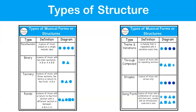Here are diagrams of the different types of structures. Monothematic is a single melodic idea that is repeated. Binary is two sections: AB. Ternary is ABA. Rondo is ABACA — represented with a circle, triangle, circle, square, circle, where the circle is A, triangle is B, and square is C. Theme and variations is a melody repeated with a variation each time, shown by the circle changing colour. Through Composed has no repeating sections. Strophic has verses only, with variations in the lyrics not the melody. Song Form has a combination of verses and choruses, usually with an introduction, coda, and solo.